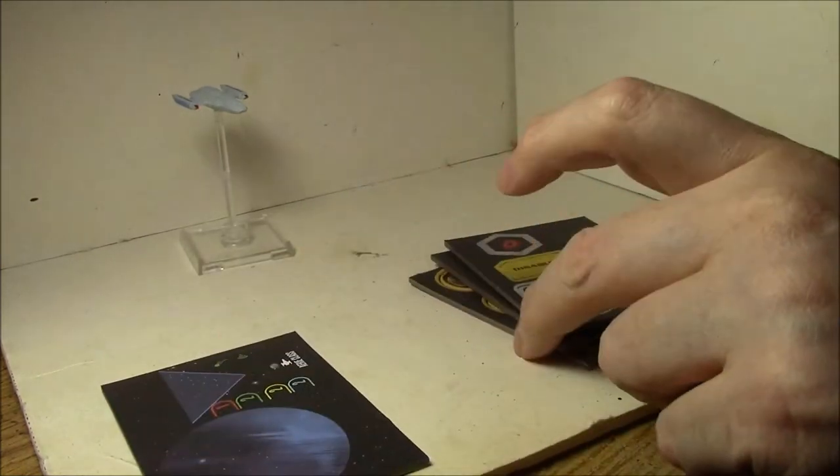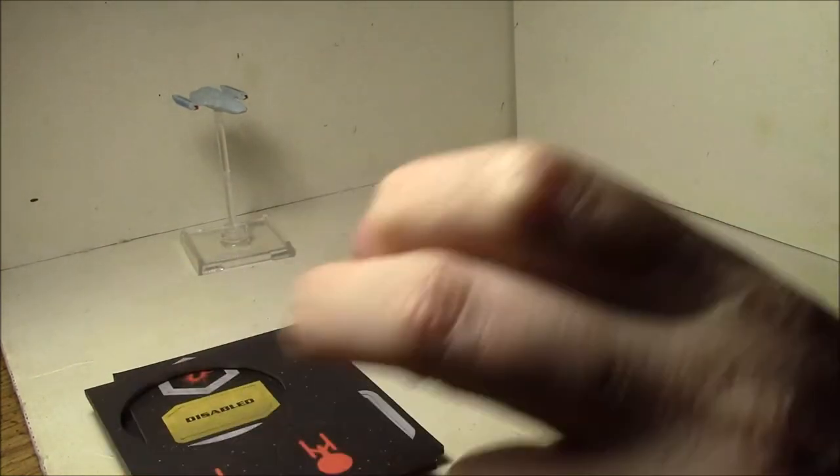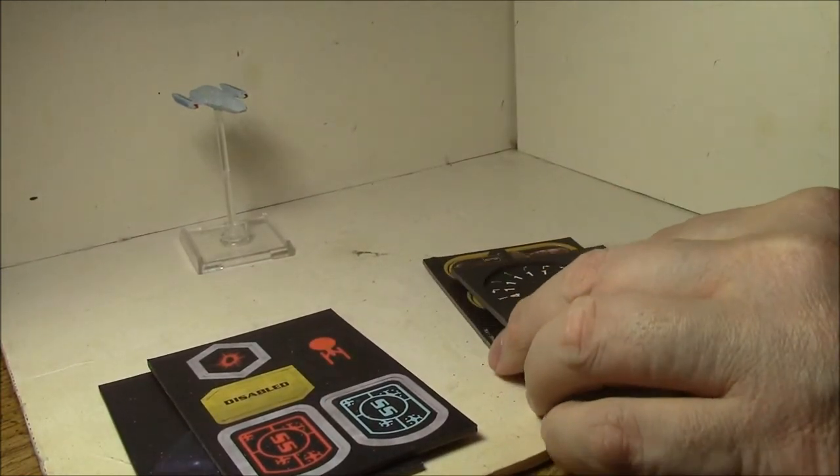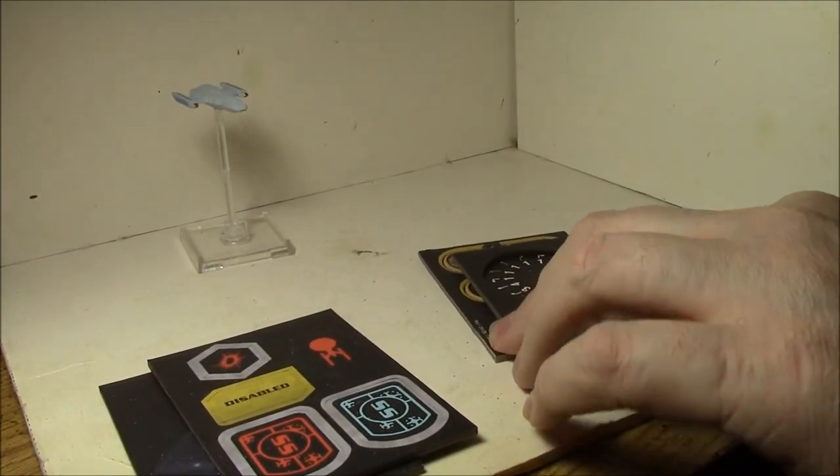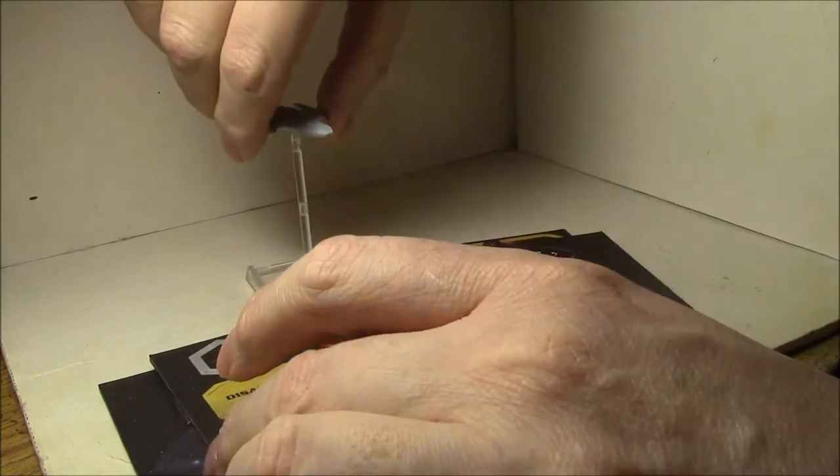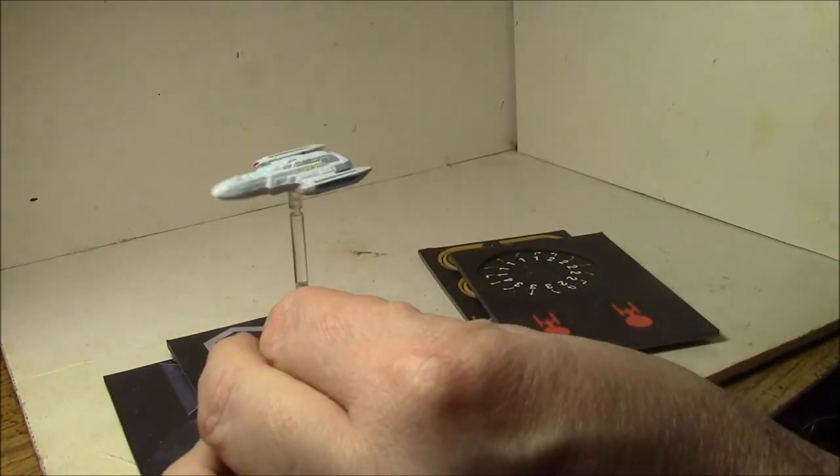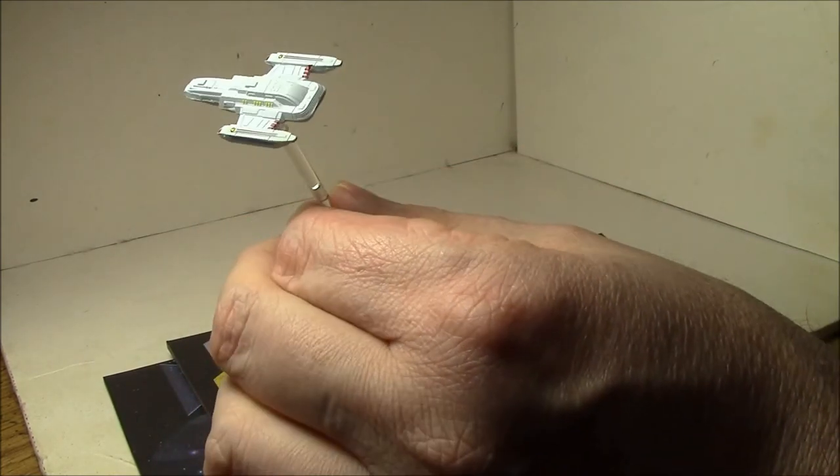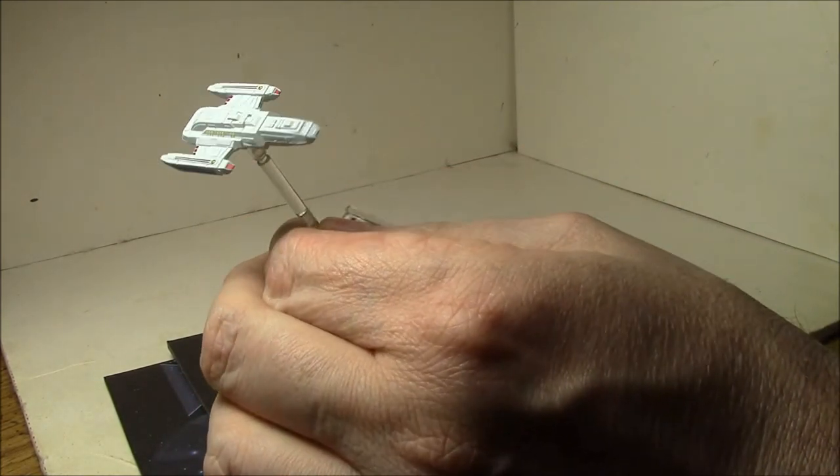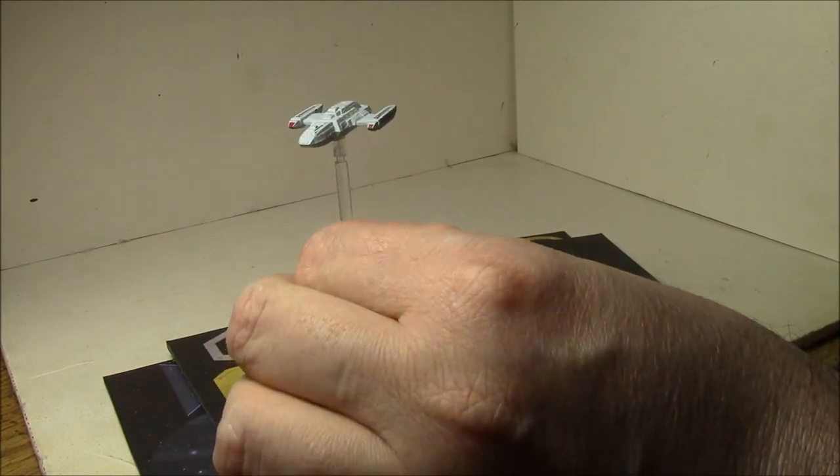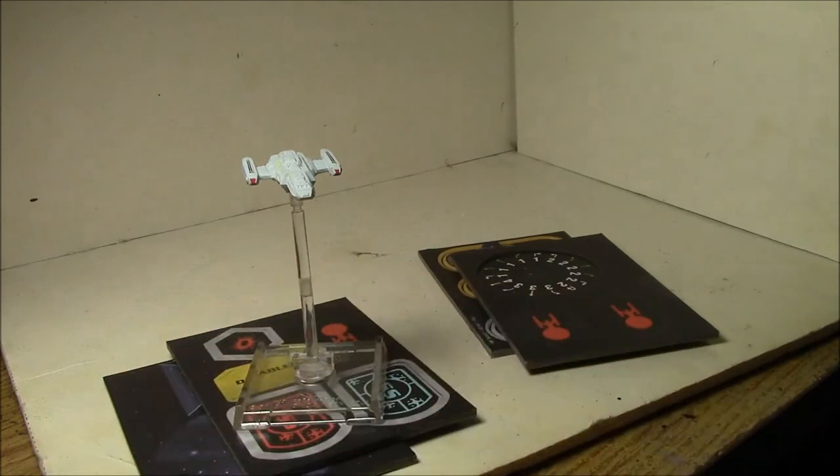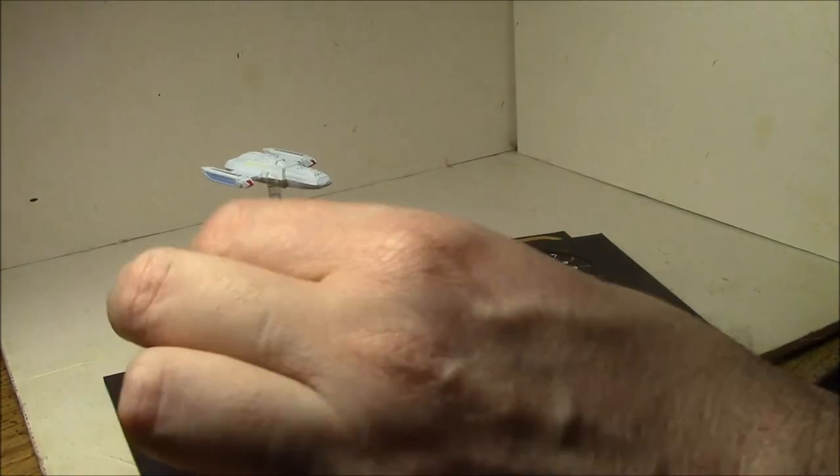So that's really it. Let's see, a real quick look at the tokens. Nothing exciting or special, just the tokens you need to play with the ship. So that's a real quick look at the USS Raven, which is a very fluffy ship from the Voyager series. But as far as the game goes, it's not really going to make a big impact. The cards are kind of cool. They're not bad, they're definitely not bad. I wouldn't say they're great, but they're not bad. So thanks for watching.